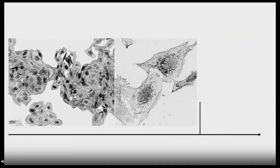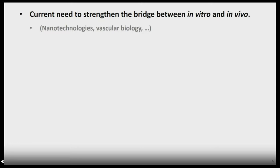The thing is, a lot of imaging advances have benefited in-vitro studies enormously — as you can see with this nice picture of cell culture with the dragonfly. The problem is, in some fields there is a gap between in-vitro studies and the next step, in-vivo. There is a need to strengthen that bridge, especially for fields such as nanotechnology and vascular biology, which involve complex 3D structures and environments.